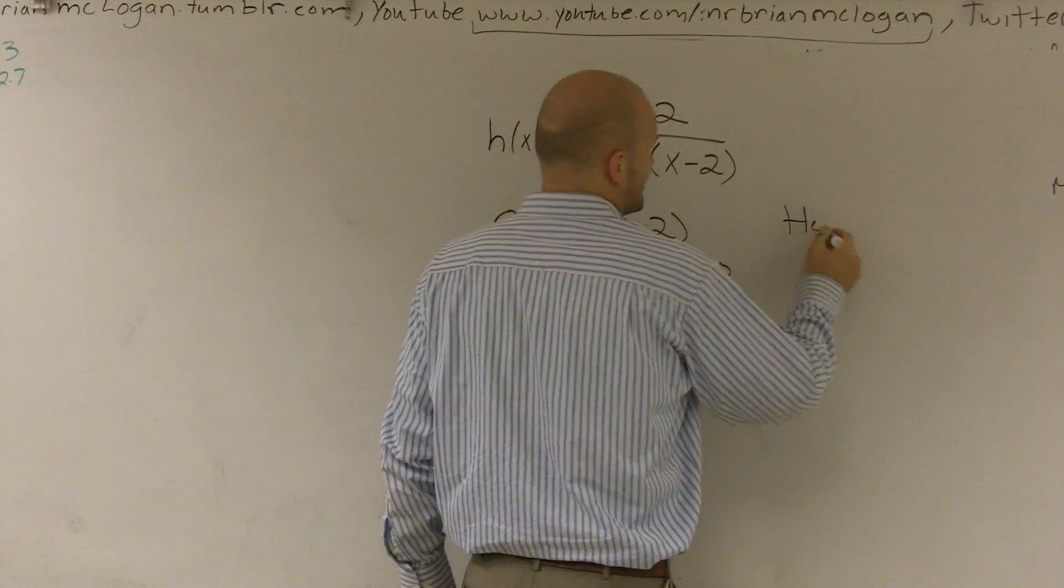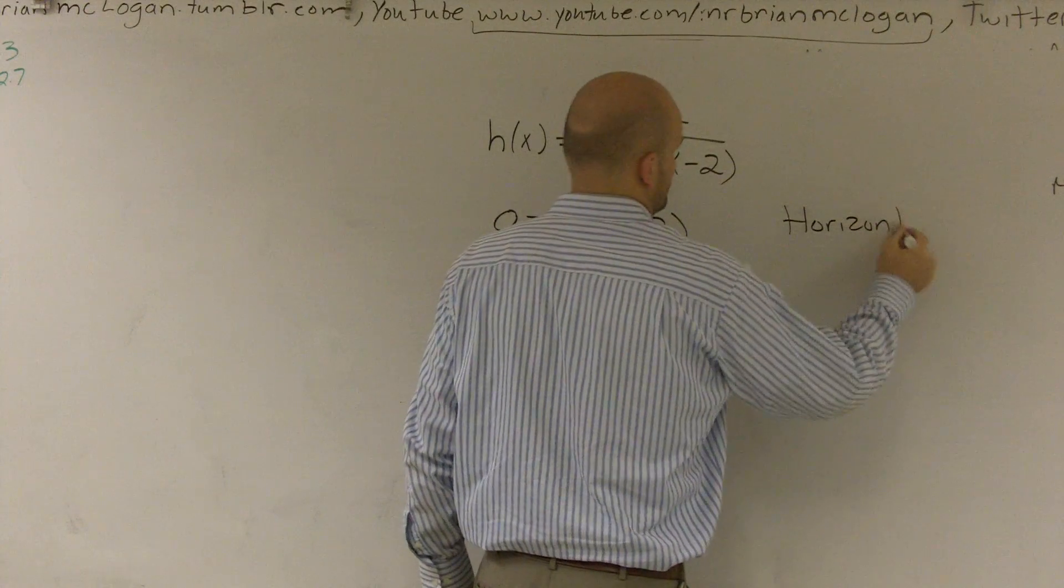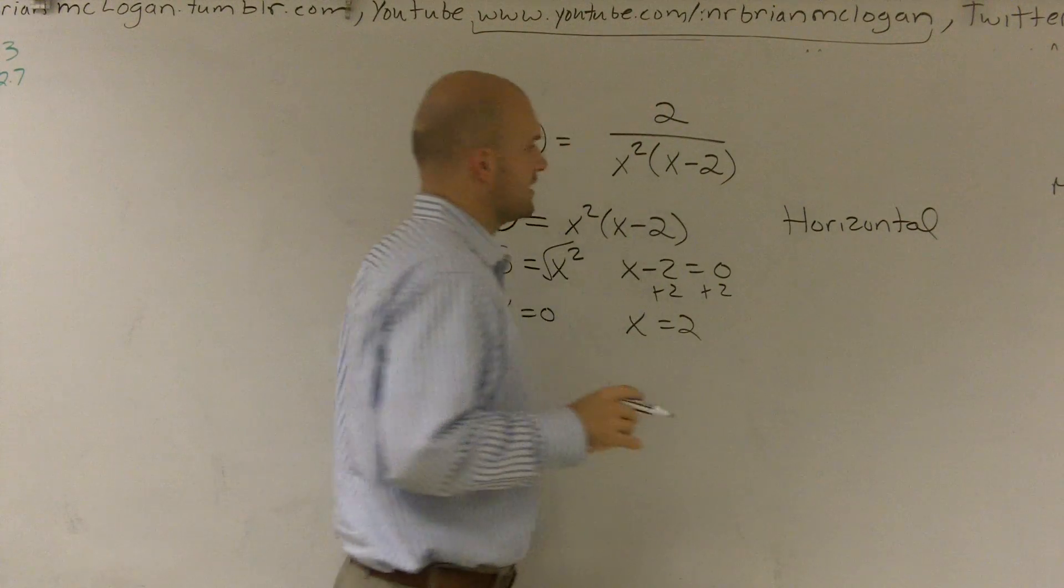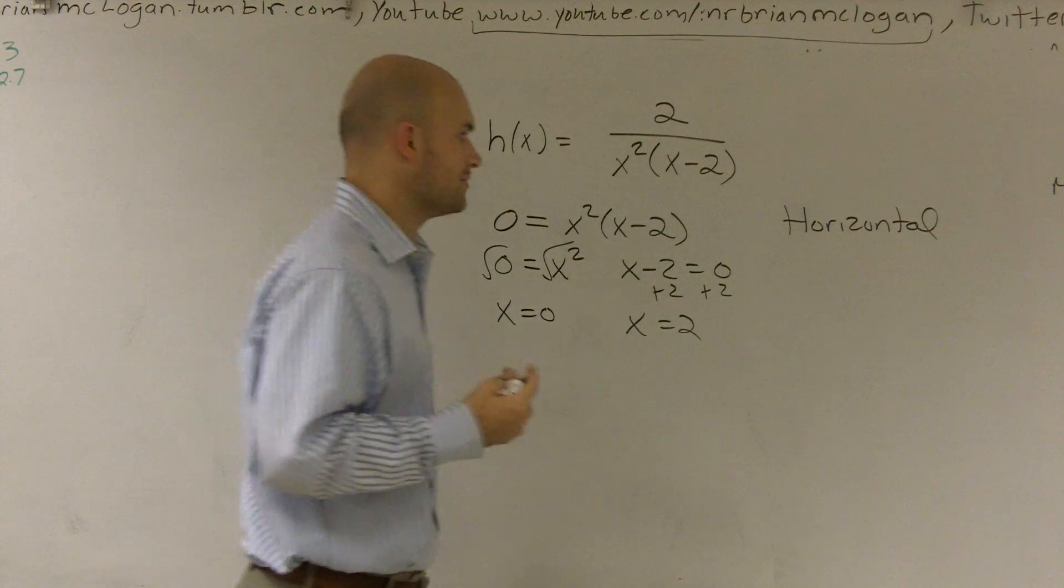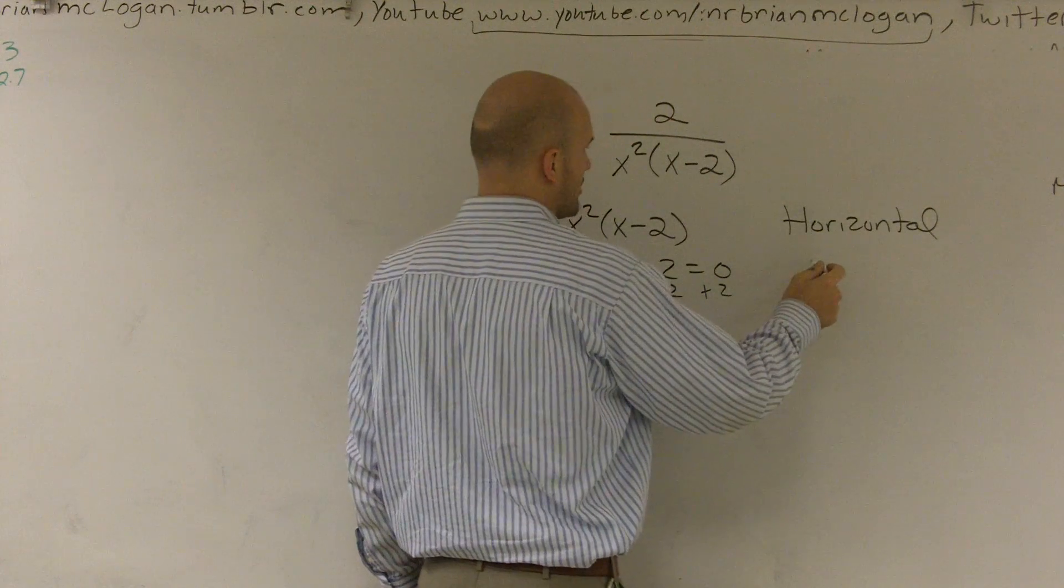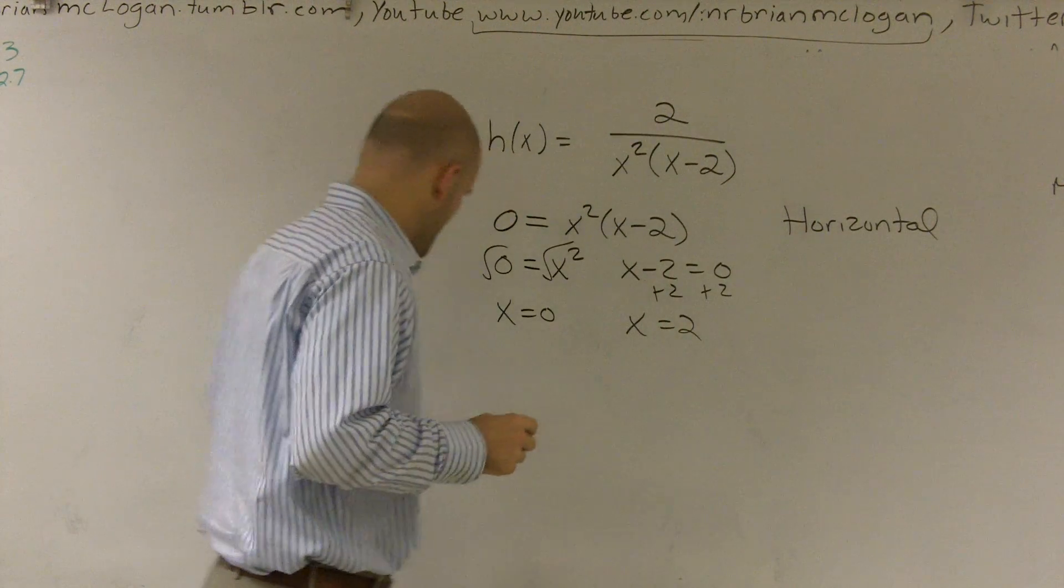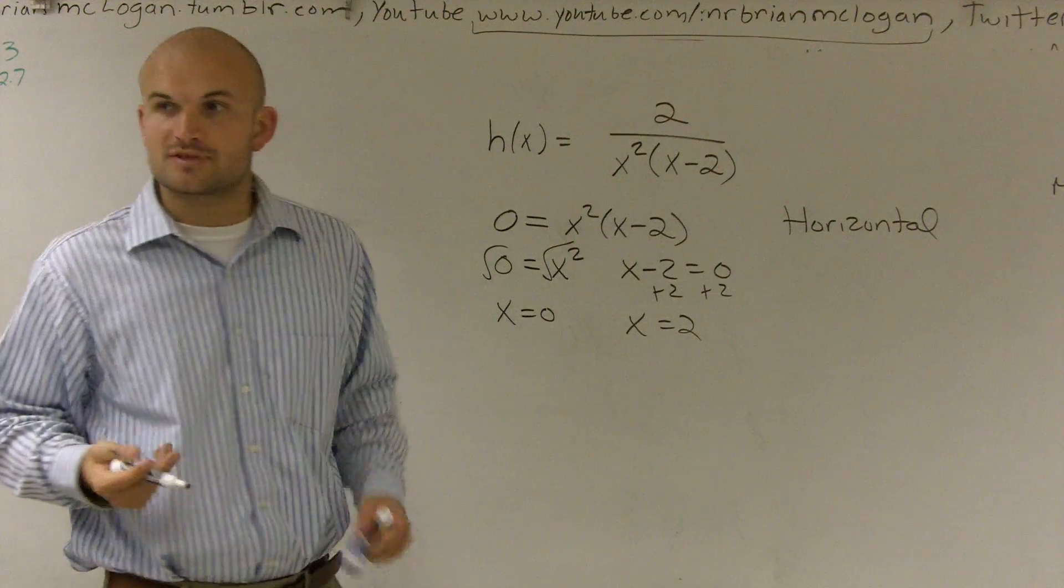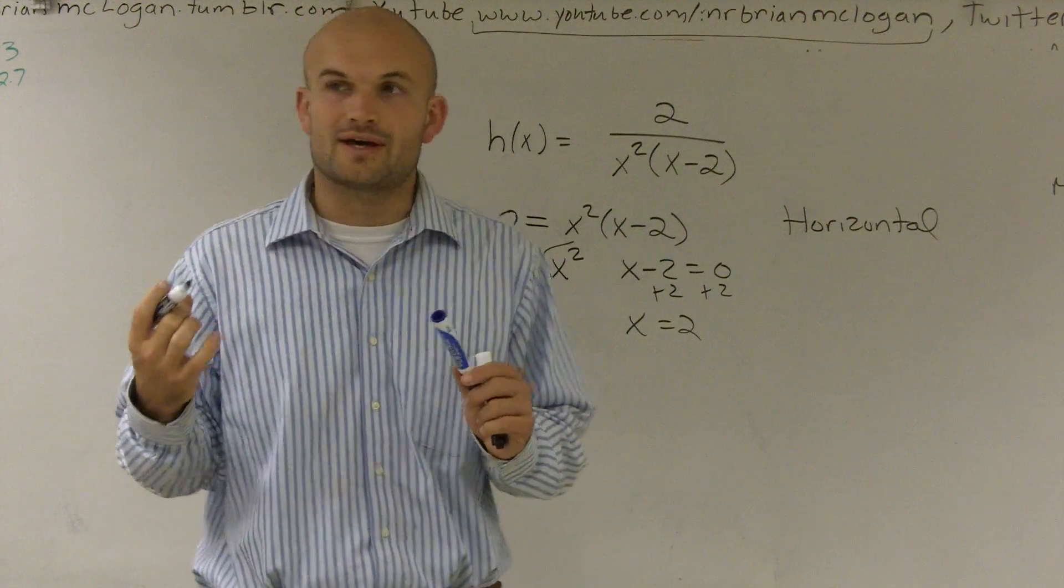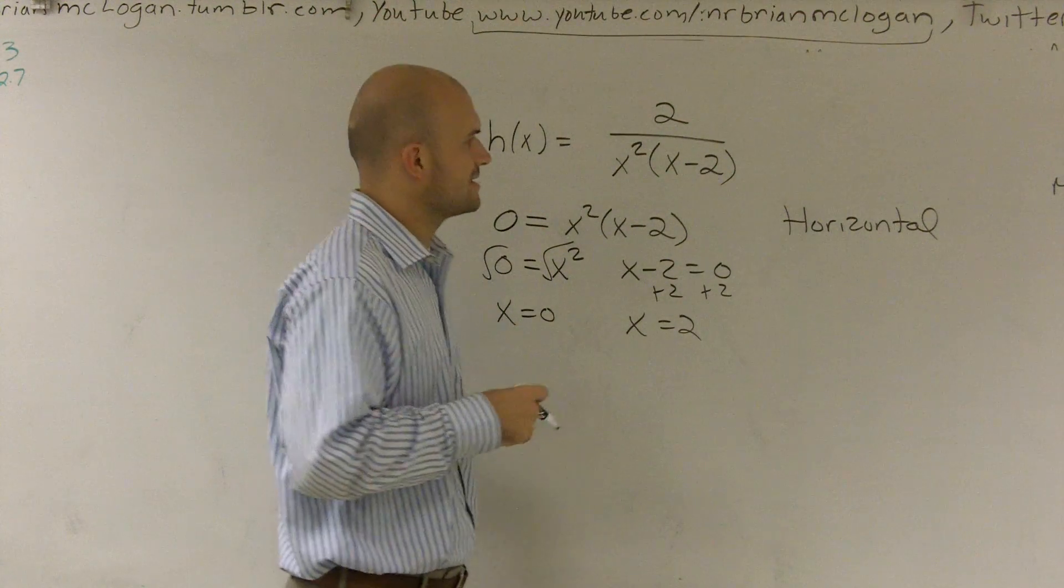Now to find my horizontal, I need to look at the degree of my polynomial. And for the degree of my polynomial, on the bottom, well, let's look up top. I don't see an x value, do I? So therefore, there still is an x value.